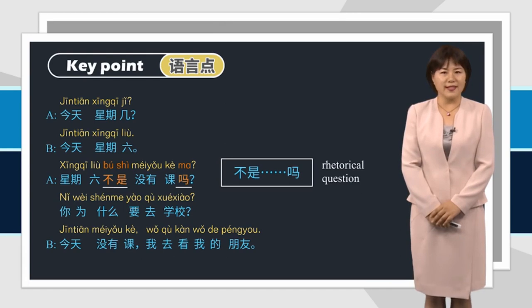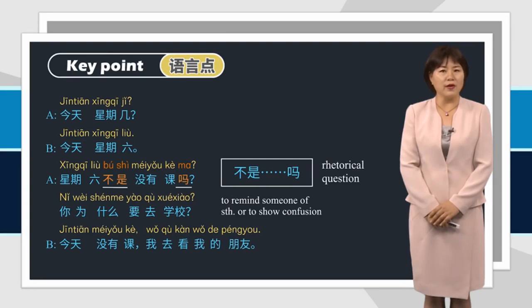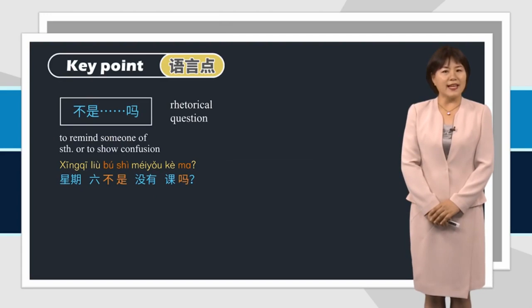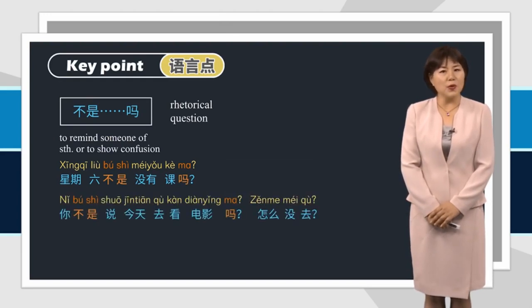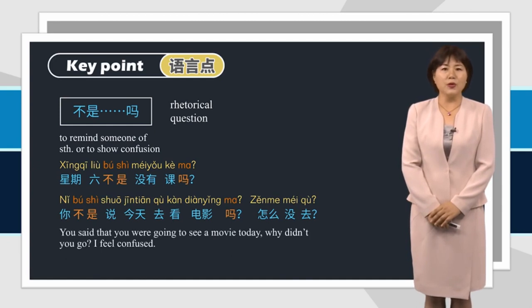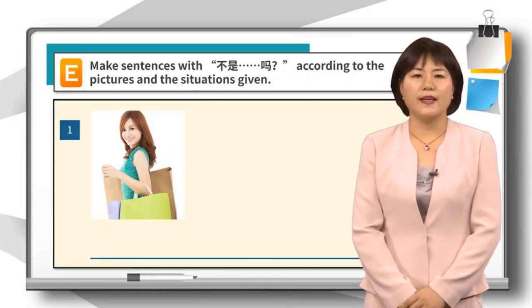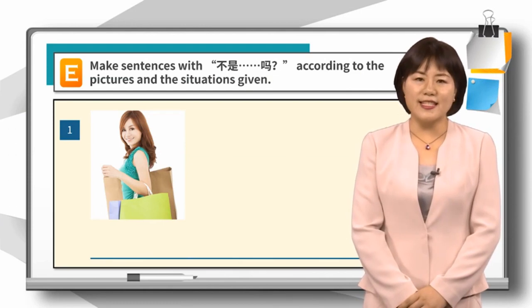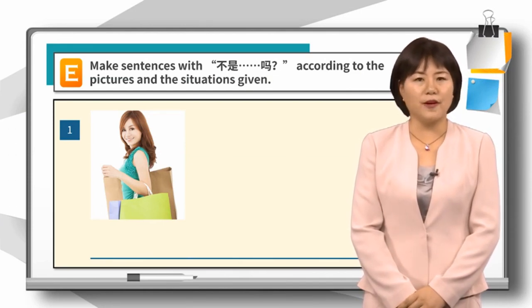星期六不是没有课吗？ It is not an actual question — you don't have to answer it. It is used to remind someone of something or to show confusion. Another example: 你不是说今天去看电影吗？怎么没去？ — You said you were going to see a movie today. Why didn't you go? I feel confused.